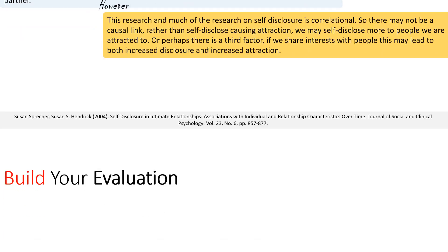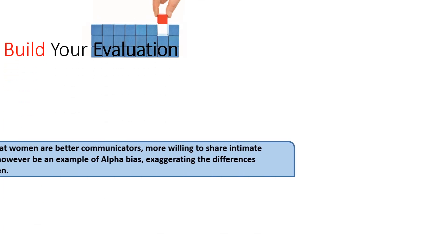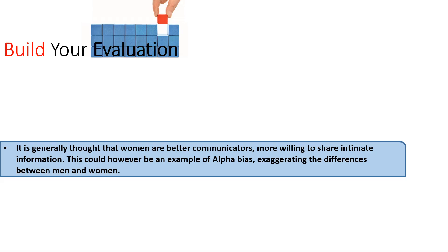Some ways to build your evaluation in this area: it is generally thought that women are better communicators and might be more willing to share intimate information, suggesting they have stronger relationships. But in psychology we can sometimes exaggerate the differences between men and women, so we could suggest that the idea that women are better communicators is an example of alpha bias. Sprecher and Hendrick's research did show that men and women self-disclose to each other in equal amounts.